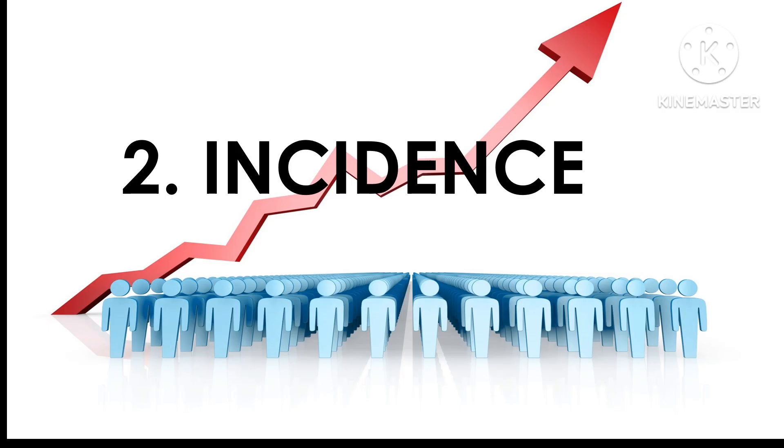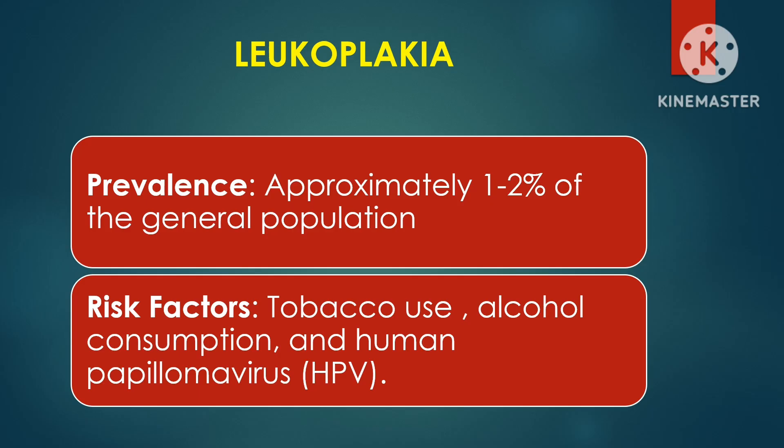Regarding the incidence of both oral lesions, these are relatively uncommon conditions, but their incidence rates and affected populations differ. Leukoplakia is seen in approximately 1-2% of the global population. It is more frequently diagnosed in older adults, particularly those with a history of tobacco use or excessive alcohol consumption. Men are more commonly affected than women, largely due to higher rates of tobacco use in males. Since leukoplakia is considered potentially pre-malignant, its prevalence is closely monitored in high-risk populations.